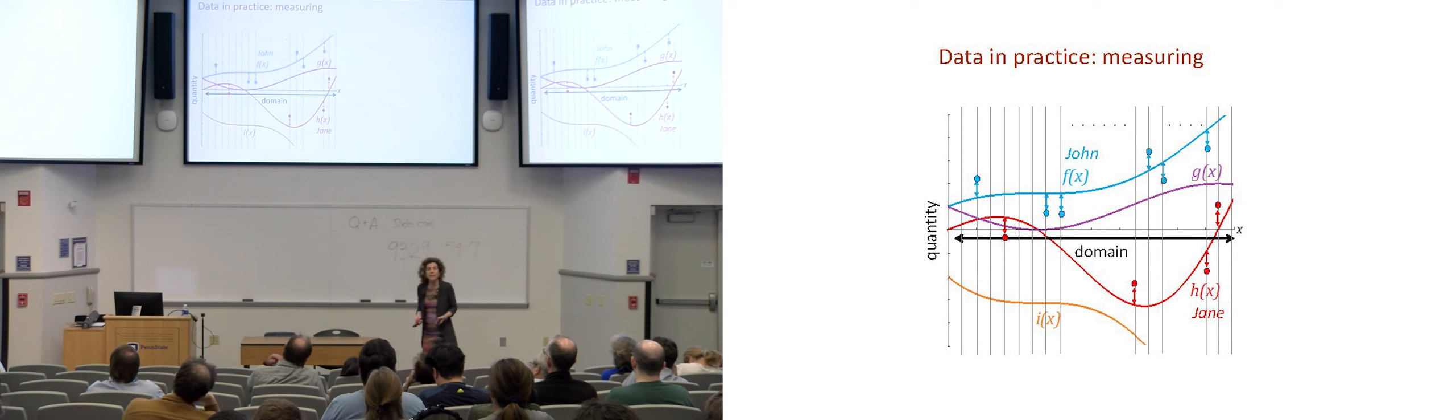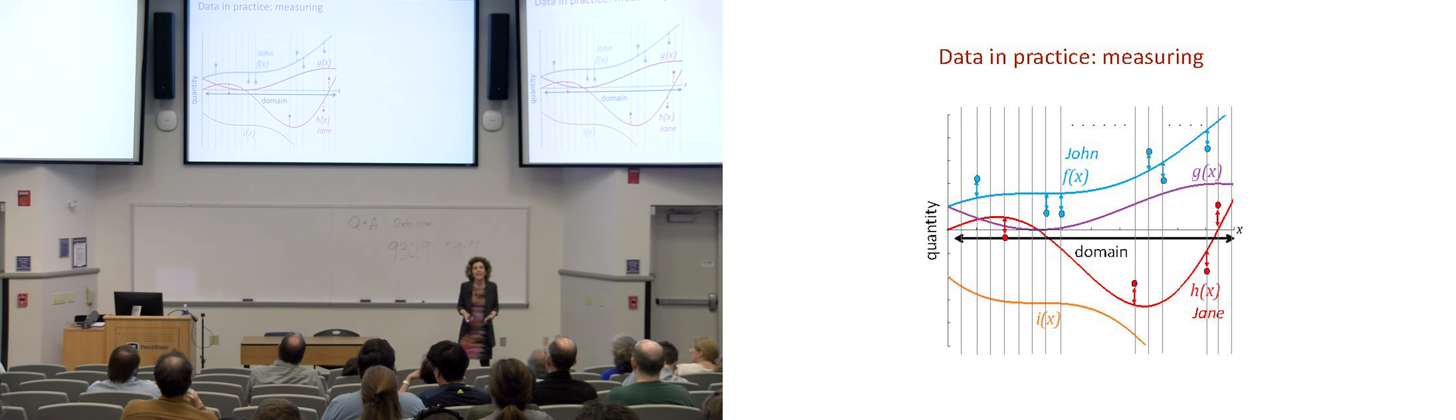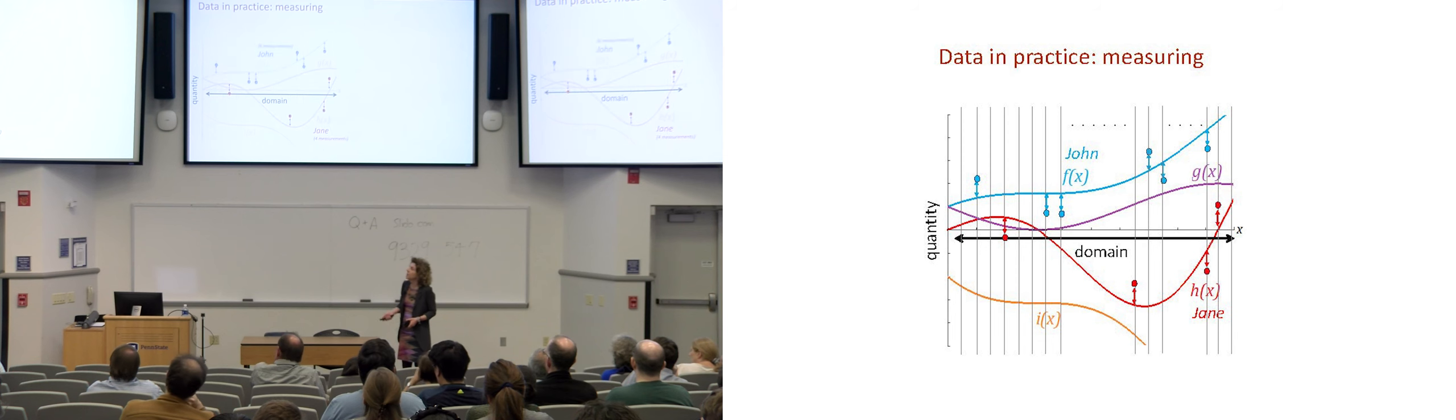So, these measurements are discrete and they need not coincide across people. The second important thing that happens is that these measurements are actually taken with error. For instance, the pulse oximeters at the clinic may have a limited degree of accuracy and these measurements are going to be taken with error. So, this is how the data actually looks like when we get it.